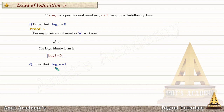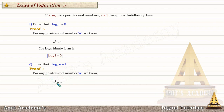The second law is that log a to the base a is equal to 1. This is the second law of logarithm. In proof: for any positive real number a, we know that a raised to 1 equals a. This is the exponential form, and its logarithmic form is log a to the base a is equal to 1. And this is the second law of logarithm.